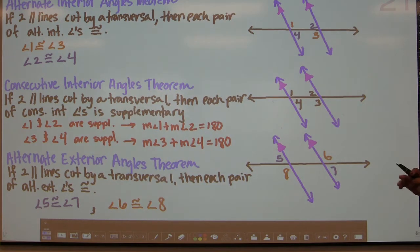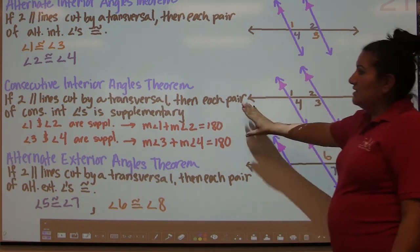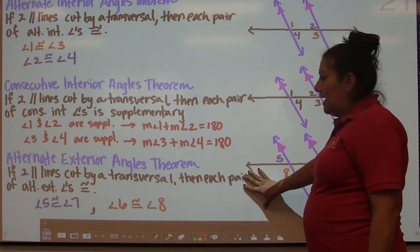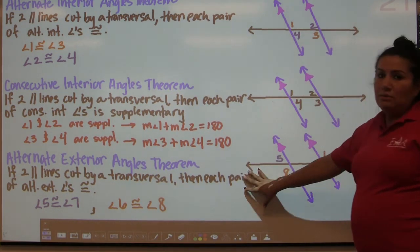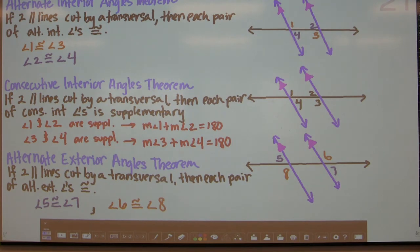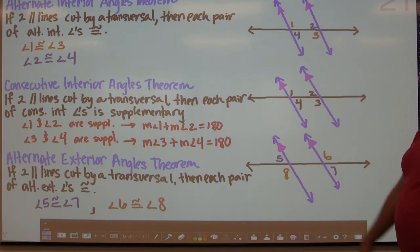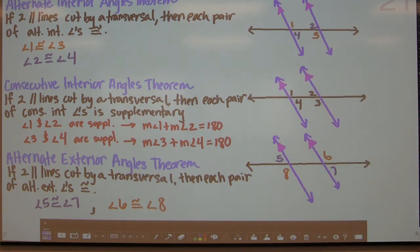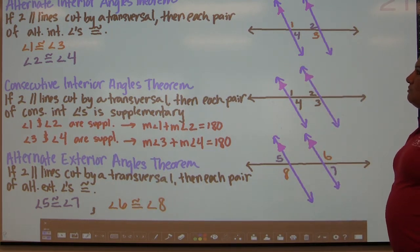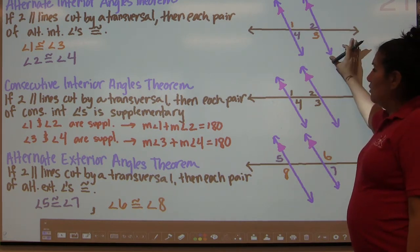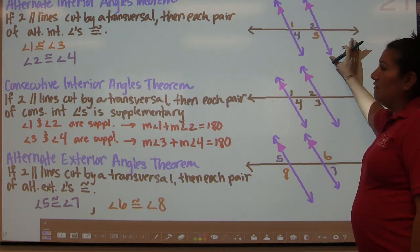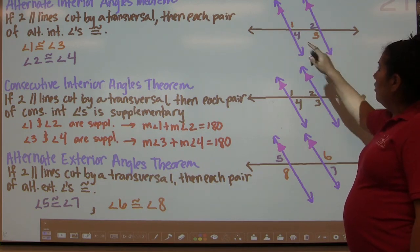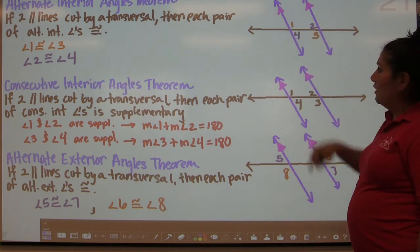Now we have a proof that demonstrates that alternate interior angles are congruent. This is the first of three theorems. You can prove consecutive interior and alternate exterior angle theorems in a similar fashion. The alternate interior angles theorem states that if two parallel lines are cut by a transversal, then each pair of alternate interior angles is congruent. They're color-coded here: angle 1 and 3, angle 2 and 4 would be congruent.